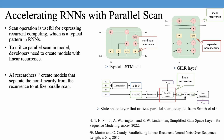To utilize parallel scan in a model, developers need to create models with linear recurrence. For example, a typical LSTM cell cannot use parallel scan because the recurrence part is non-linear, meaning each time step has non-linear dependency on the result from previous time steps. The GILR layer is a variant of LSTM cell which separates the non-linearity from the recurrence. AI researchers create models that separate non-linearity from recurrence to utilize parallel scan for long-sequence workloads.